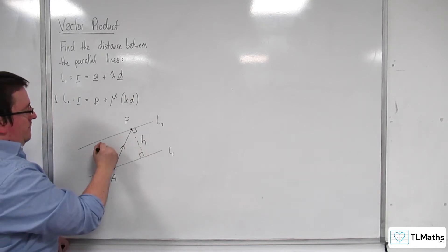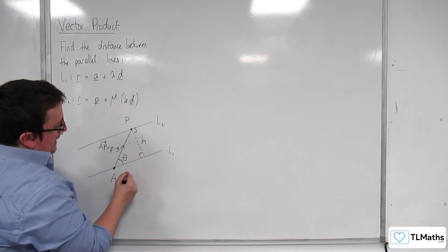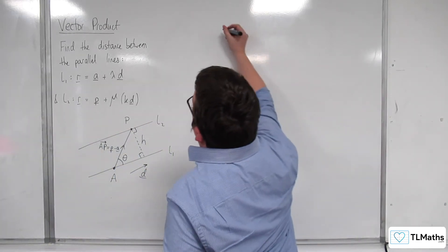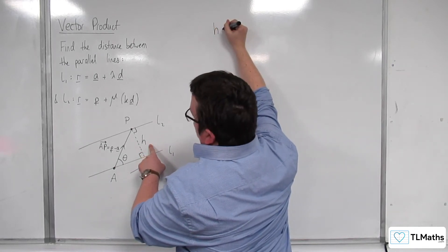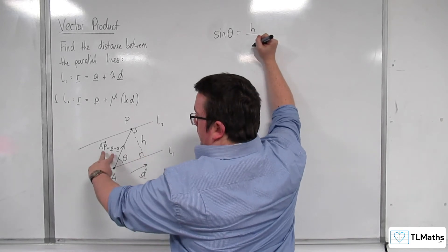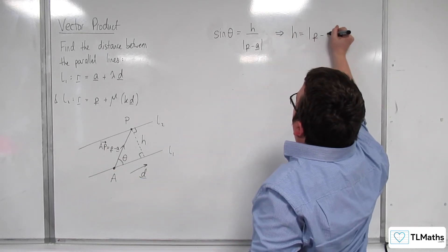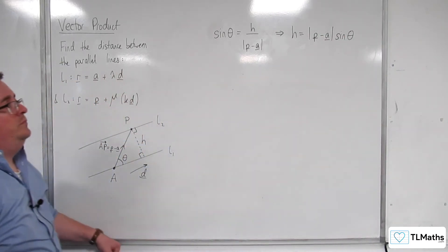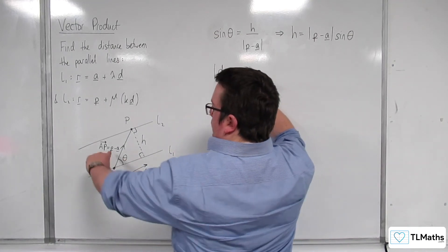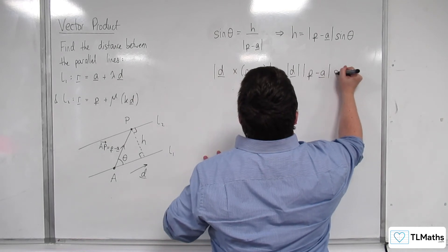The vector AP is going to be p minus a. This is going to make an angle theta, and line L1 is in the direction of the vector d. Using SOHCAHTOA, I can say that sine of the angle is equal to the opposite divided by the hypotenuse — the length of P take away A. So h is equal to the length of P take away A times sine of the angle. Writing down the vector product: the length of d crossed with P take away A equals the length of d times the length of P take away A times sine of the angle.